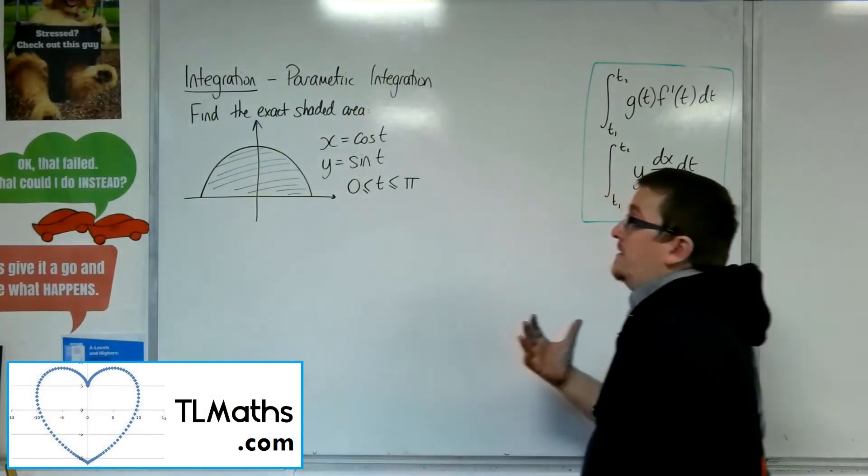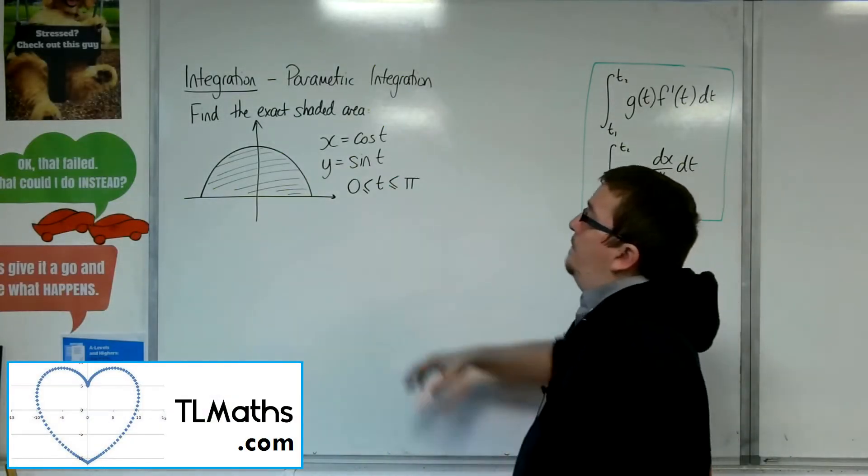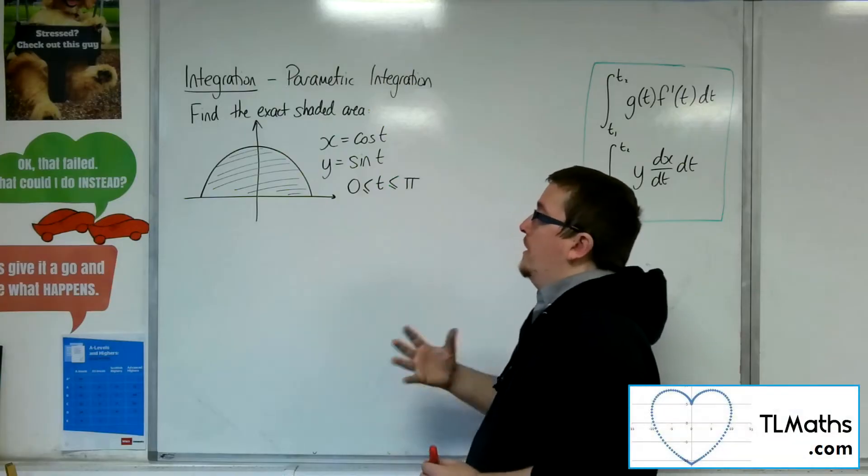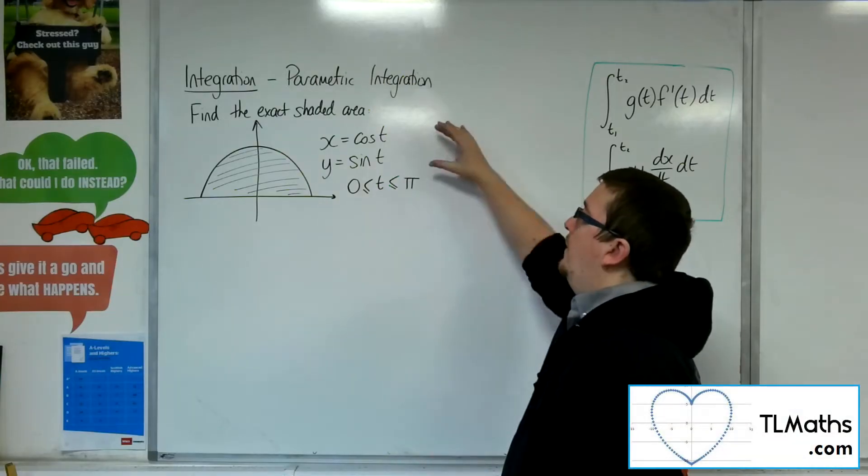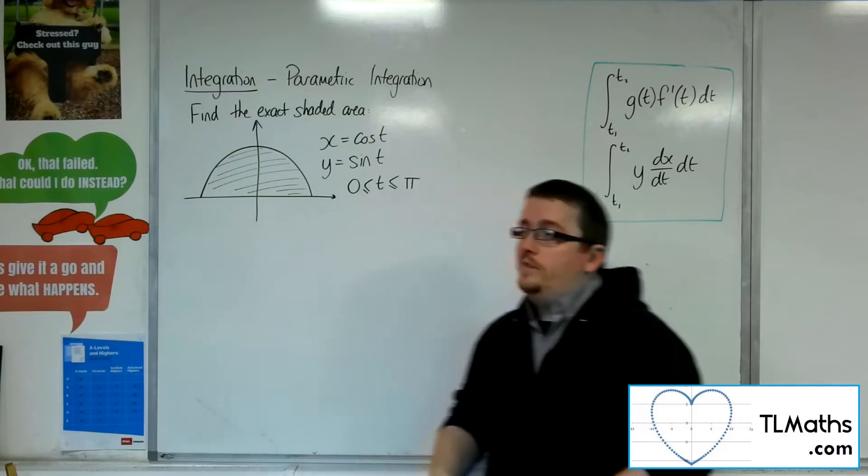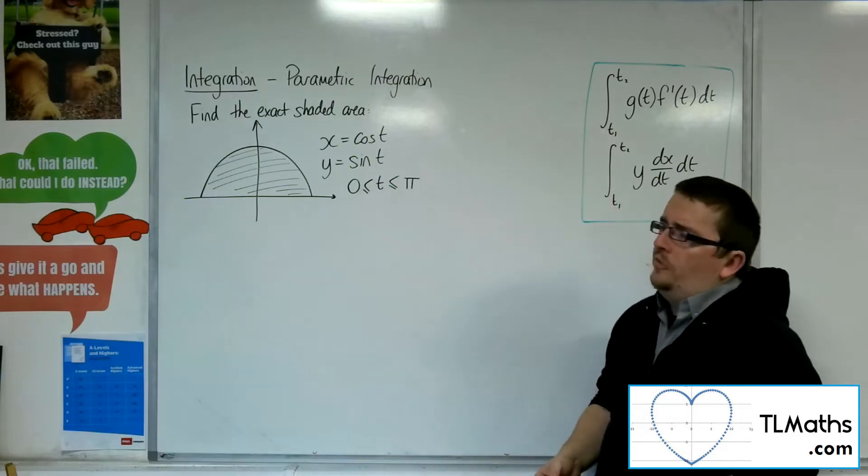So let's say I want to find the exact shaded area underneath this curve, between the curve and the x-axis, and the curve is given parametrically as x equals cos t, y equals sine t, and t is going from 0 up to pi.